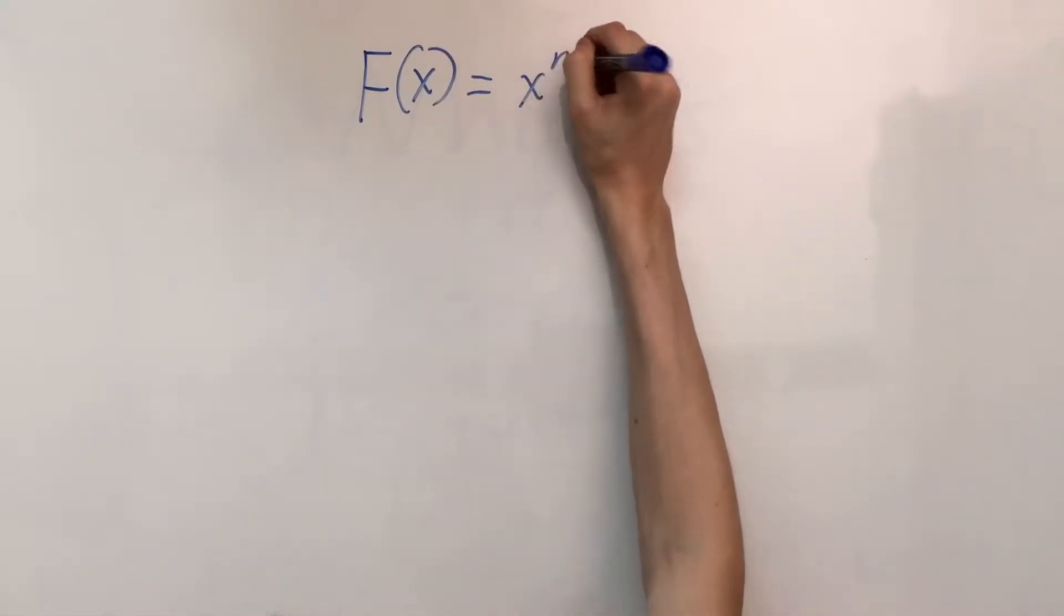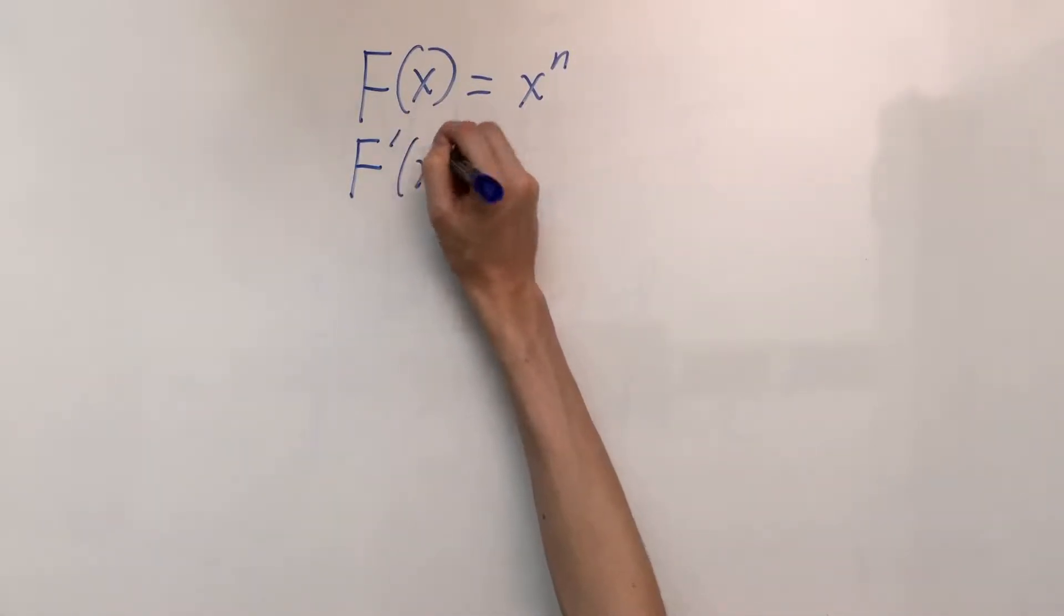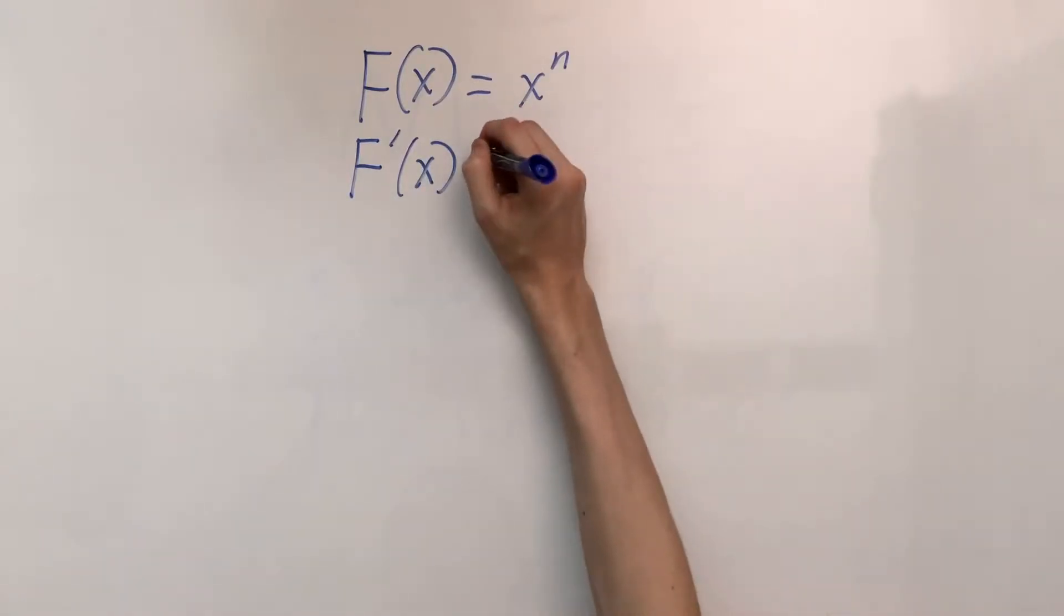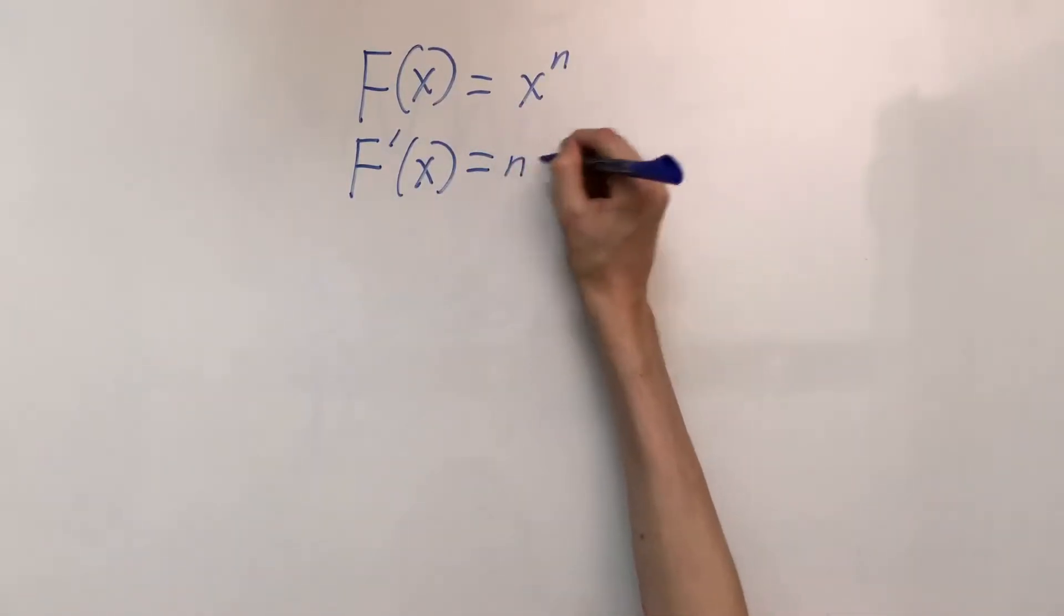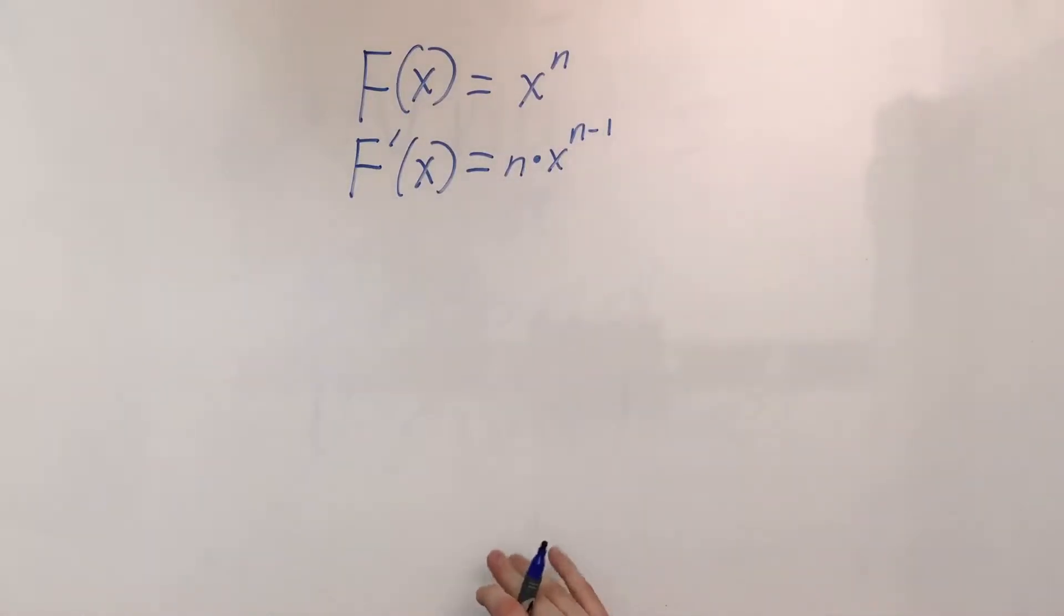So if we've got F of x equals x to the power of n, we know that the first derivative or just the derivative of it is equal to n times x to the power of n minus one.